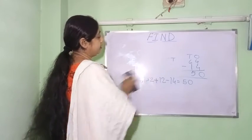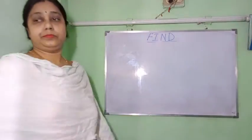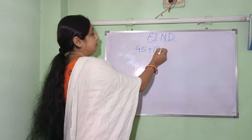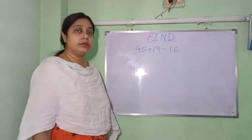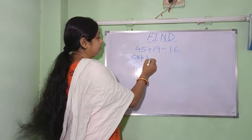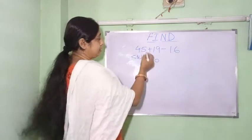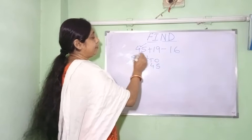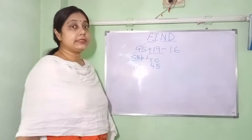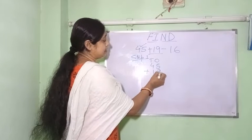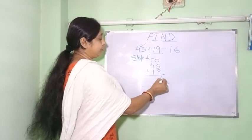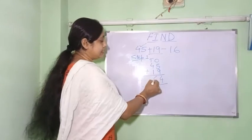Now let us do one with borrowing or carrying. We write: 45 plus 19 minus 16. Step 1: copy down 45, and below write plus 19. Now 5 plus 9 — count on: 10, 11, 12, 13, 14 — so 4 carry 1. Then 4 plus 1 plus 1 is 6, giving us 64.